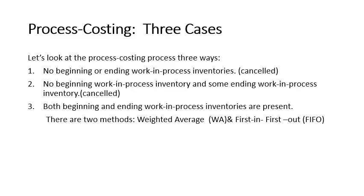There are three cases in Process Costing. The first case has no beginning or ending work-in-process, which we will skip. The second case has no beginning work-in-process inventory and some ending work-in-process inventory, also skipped. We are going to focus on whenever there is both a beginning and ending work-in-process inventory. For this case, I have two methods: weighted average and first-in, first-out.